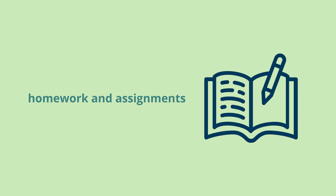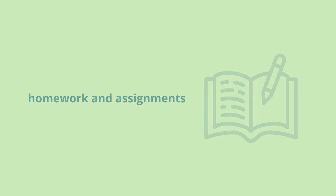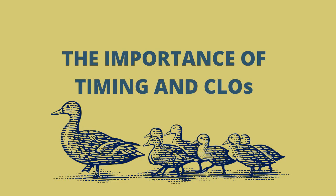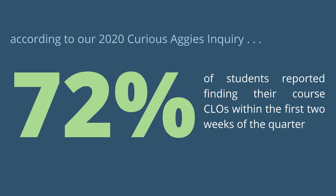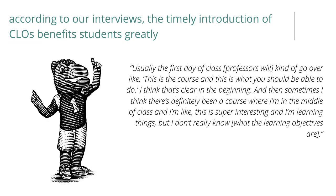If you're ever unsure of where to find your CLOs, don't be afraid to ask. It is key to understand the timing of when to find CLOs. According to our 2020 Curious Aggies Inquiry, 72% of students reported finding their CLOs within the first two weeks of the quarter, which is the most beneficial time to have and understand your CLOs. CLOs that are clear and delivered early have only benefited the student.